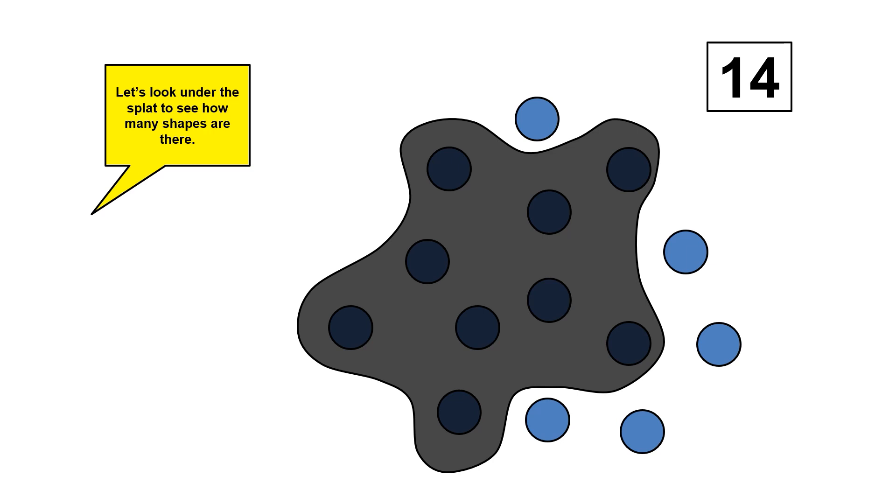You could have thought about how 14 can break apart into 9 and 5. You could have also used a friendly number like 10. If you know that 5 and 10 make 15, then one less would be that 9 and 5 make 14.